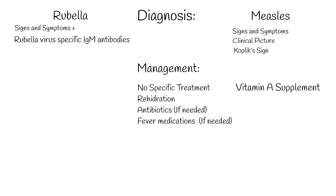Measles also has no specific cure. Oral rehydration solution can help, along with slightly sweet and salty fluids, healthy food, and medications for fever. Antibiotics are used if secondary bacterial infections occur, such as ear infections or pneumonia. Vitamin A supplements can be helpful in children.